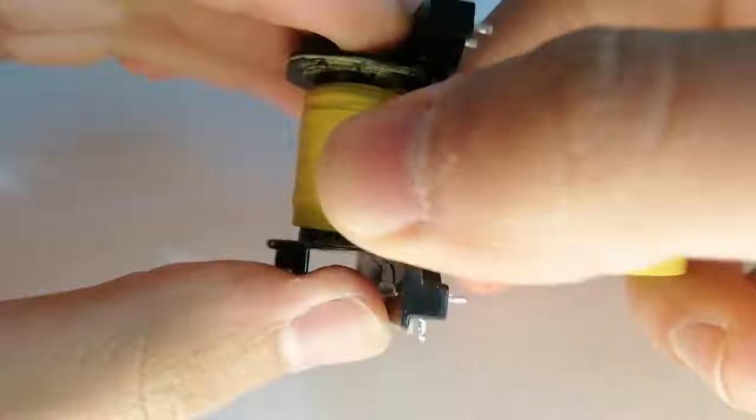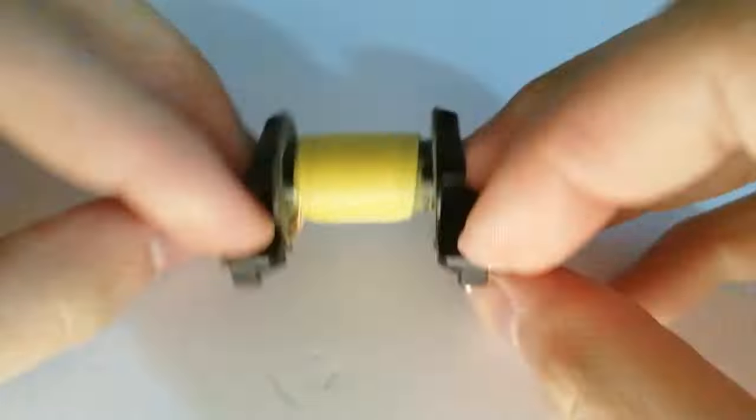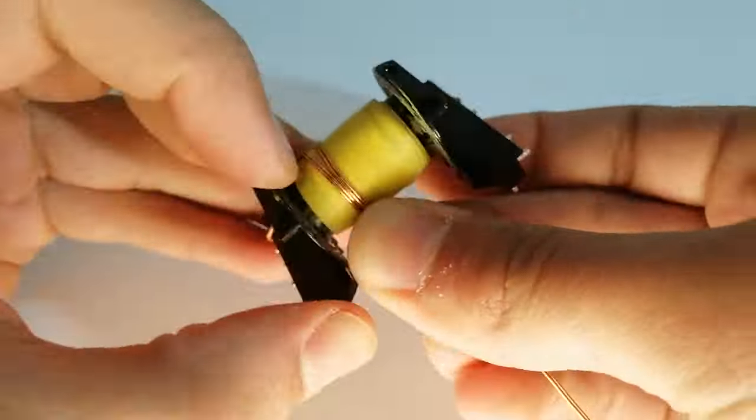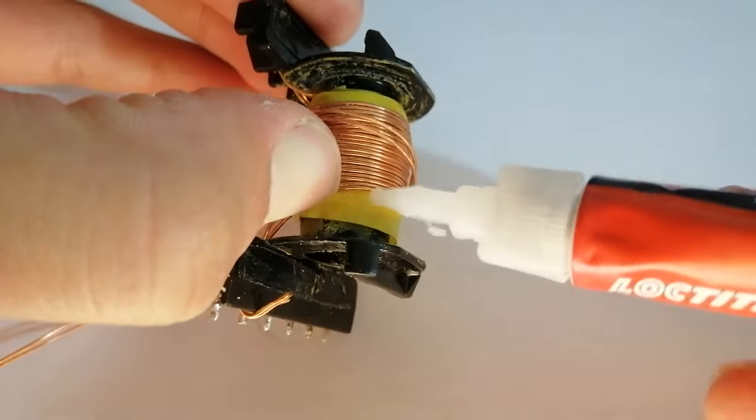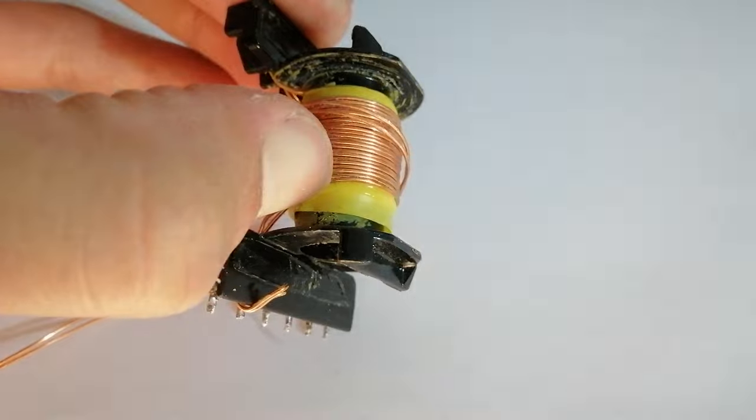At this point we can wind the secondary. A good trick is to super glue the first part and last part of the coil so that it's easier to work with and it doesn't start to come loose and unwind by itself.